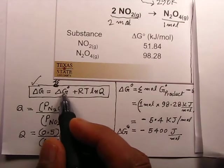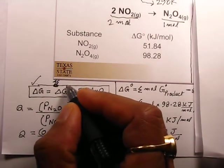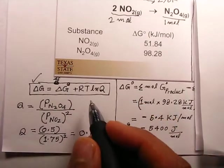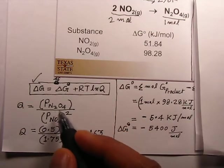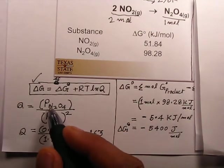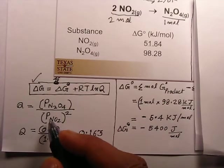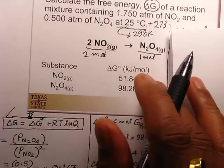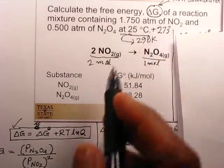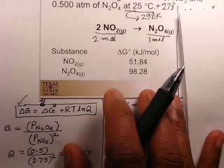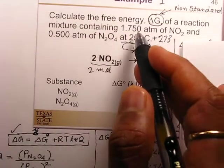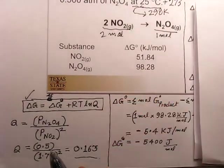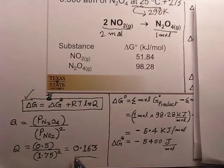Delta G equals delta G° plus RT·ln(Q). First we calculate Q. Q equals the pressure of N₂O₄ (the product) divided by the pressure of NO₂ squared, because these are gases and concentrations are given in atmospheres. So 0.5 for N₂O₄ and 1.75 atmosphere for NO₂ — we place the values in and calculate Q.